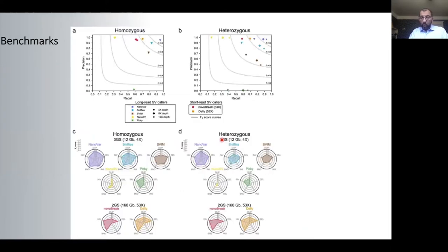In contrast to all current methods, NanoVAR is optimized for low-depth sequencing samples, which represent 4x to 8x coverage, which makes it affordable for large cohort studies.